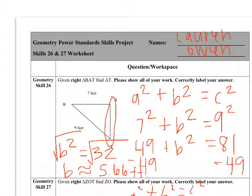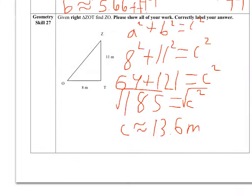B, or length AT, is approximately 5.66 feet. The second problem was, given right triangle ZOT, find ZO.